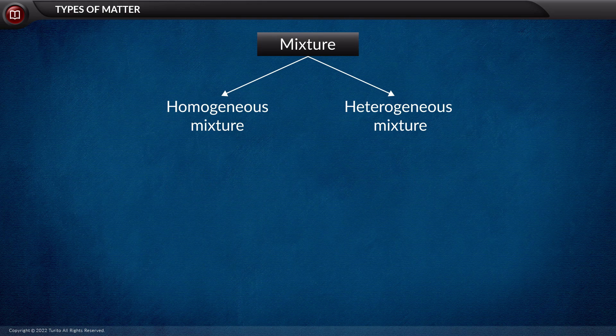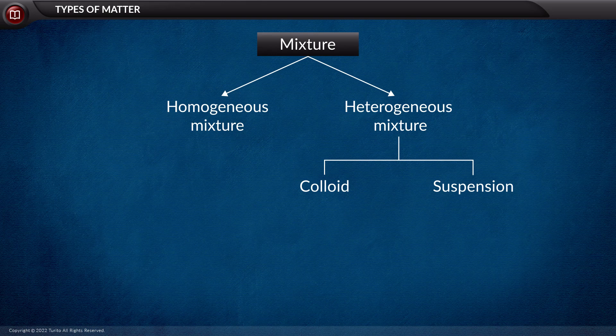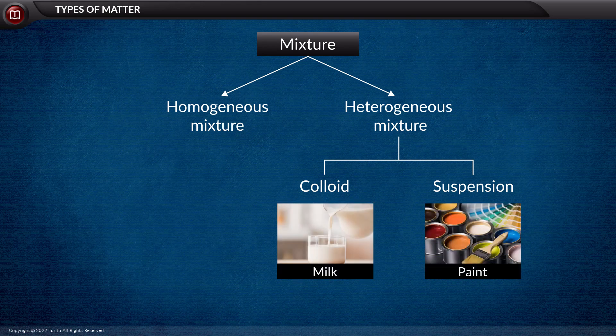Further, heterogeneous mixture is divided into two types: colloid and suspension. For example, milk, which is a colloid, while paint is an example of a suspension.